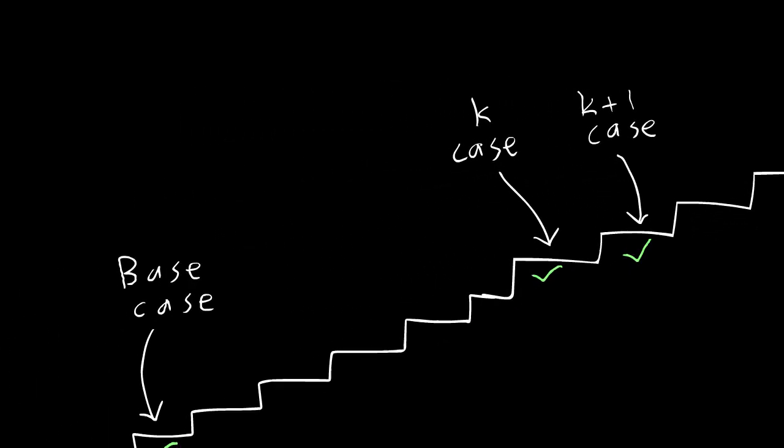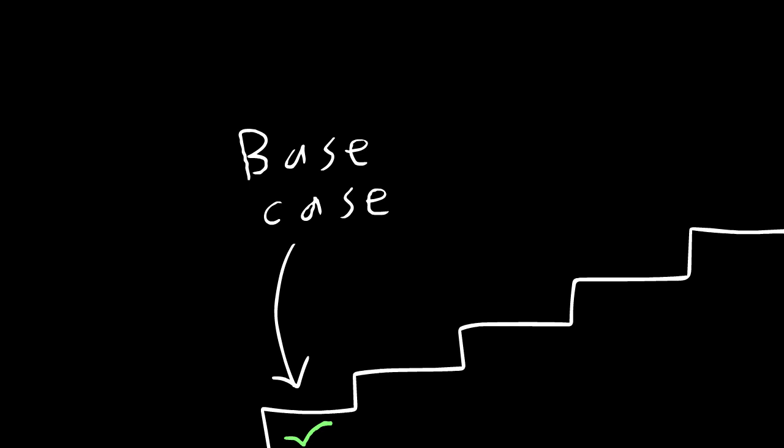Combining these gives a nice staircase-like proof technique. We know that the first step is true, and since k works, k plus one works, i.e. two works. Then since two works, three has to work. Then since three works, four has to work, and so on.